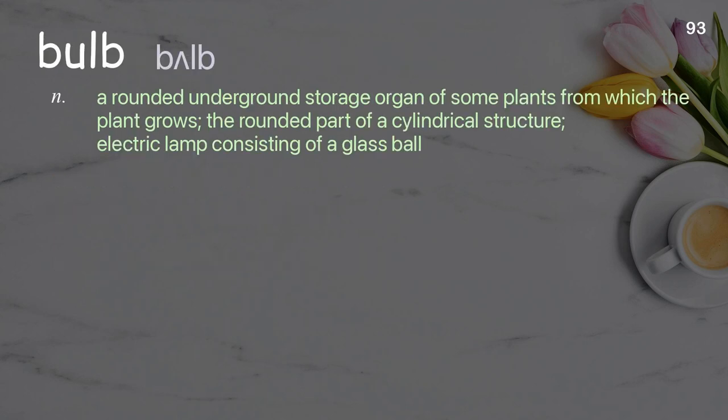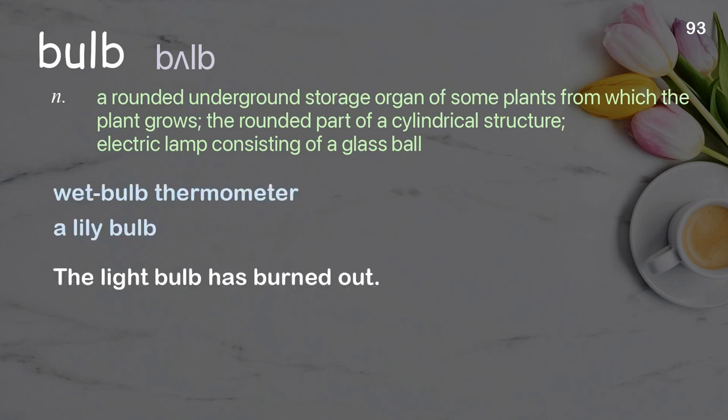Bulb: a rounded underground storage organ of some plants from which the plant grows; the rounded part of a cylindrical structure; an electric lamp consisting of a glass ball. Examples: wet bulb thermometer, a lily bulb. The light bulb has burned out.